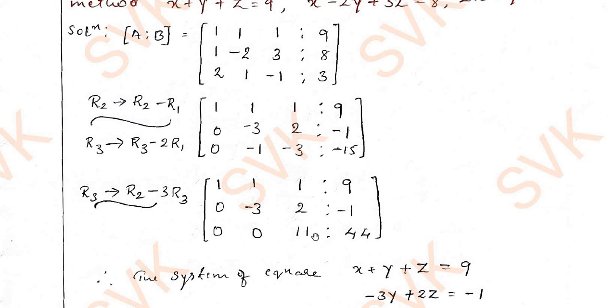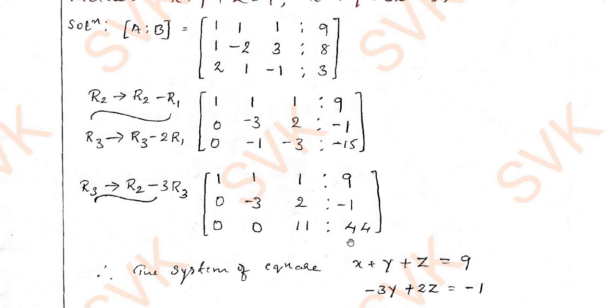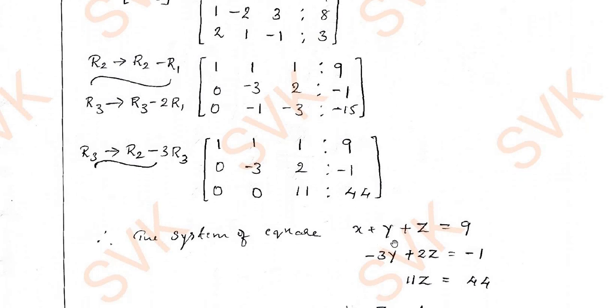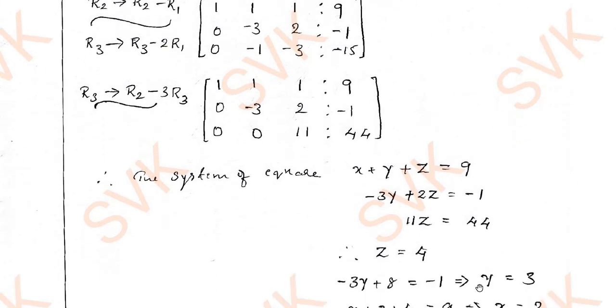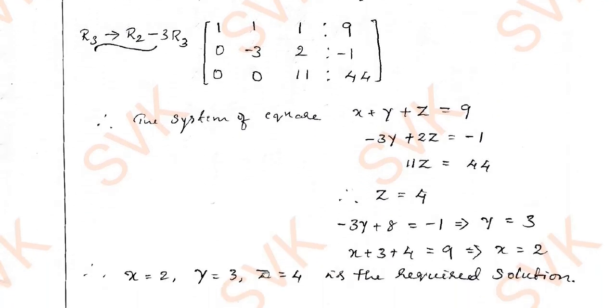I have not done the leading entry as 1 since I am going to rewrite this in equation format. This is what the system of equation I have got: x + y + z = 9, -3y + 2z = -1, 11z = 44. Solving this system of equation, I am going to get z value 4, y value equal to 3 and x equal to 2 is the required solution for the given system of equation.